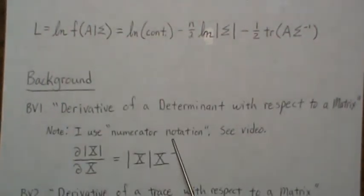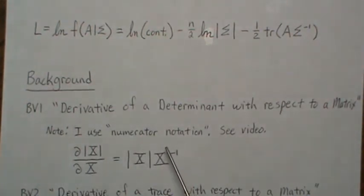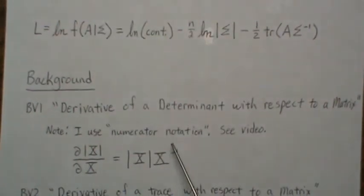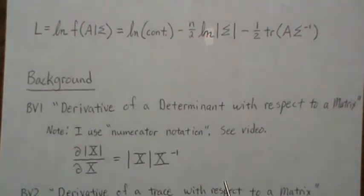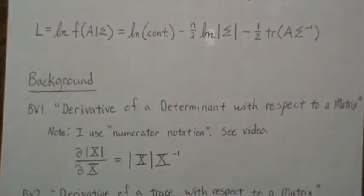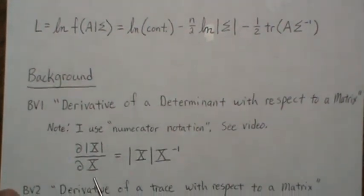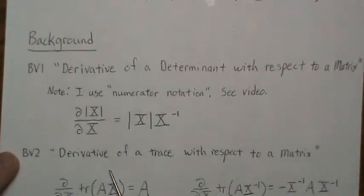And if you're not familiar with numerator notation or denominator notation, I think a good reference is the Wikipedia page on multivariate calculus. I think they do that well. But in this derivation, we use numerator notation. And it's unfortunate that there's more than one set of notations that are used equally often. So here's the result for the derivative of the determinant of x with respect to x, and x is a matrix.